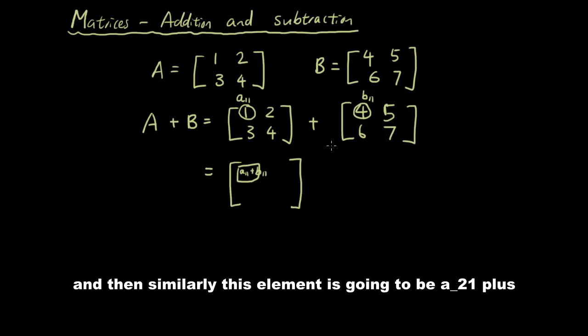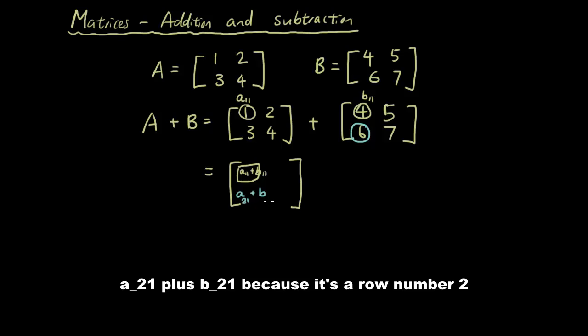And then similarly, this element is going to be A_21 plus B_21, because it's row number 2, column 1, and so on.